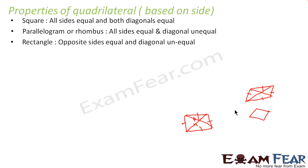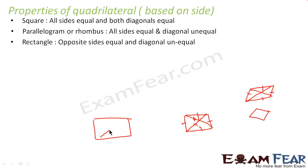In case of rectangle, if it is a rectangle, then opposite sides are equal, and diagonals are equal. In case of rectangle, the diagonals are equal.